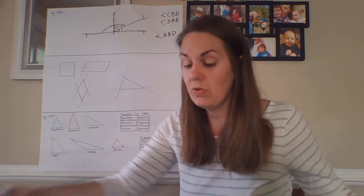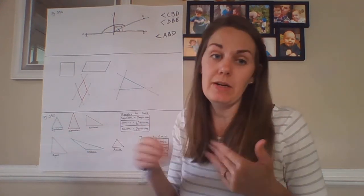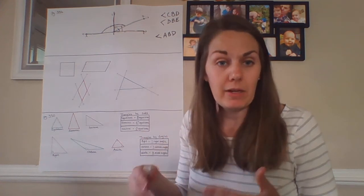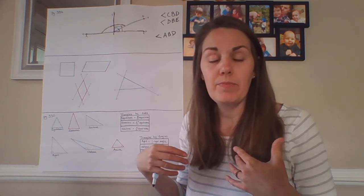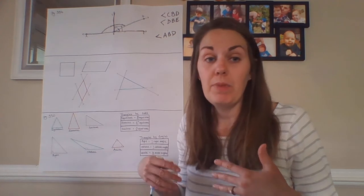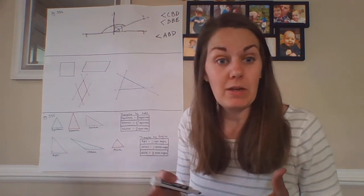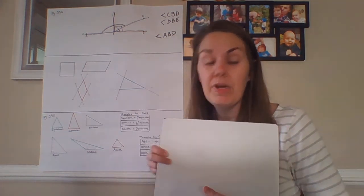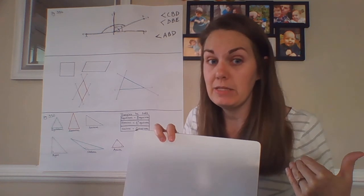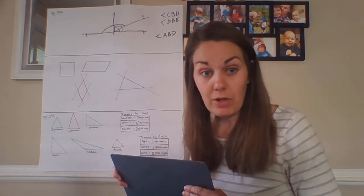Skipping to page 349, we're now talking about classifying shapes by angles. They have a Venn diagram with three sections: acute angles, right angles, and obtuse angles. We can classify shapes by placing them in the section that matches their angle types, and shapes with multiple angle types fall in the overlapping regions between sections.